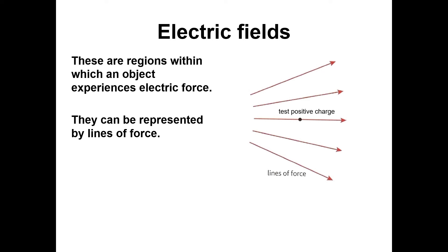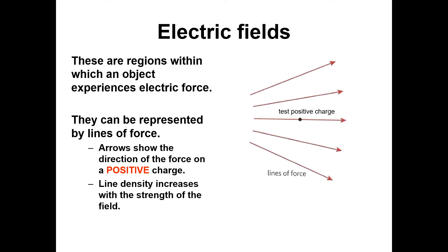For electric fields, when you're doing the arrows on electric field lines, just imagine a test positive charge and the direction that that would go. Electric fields are similar to gravitational fields, regions where an object experiences a force, this time an electric force, and they can be represented with lines of force. In this particular diagram here, there must be a positive charge to the left there somewhere, because the test positive charge is going to be moving to the right. Arrows show the direction of the force on a positive charge. Really important, that. And the line density increases with the strength of the field.